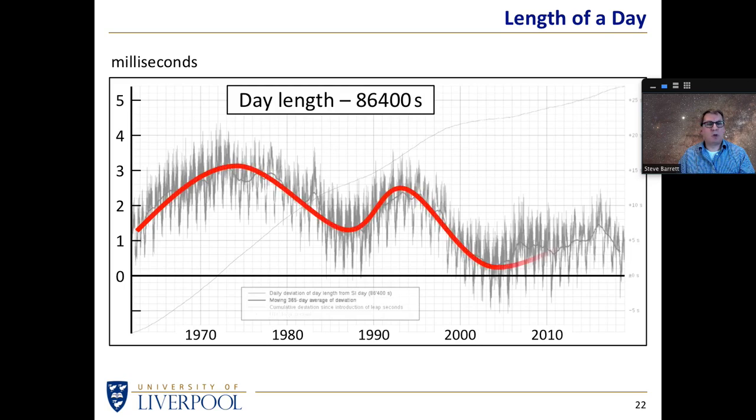But the elephant in the room is why is it varying by quite a few milliseconds on a period of decades? Perhaps the earth's mantle is changing in some way that we don't fully understand. So on average there's an increase in the length of the day over billions of years but over decades there seems to be variations that we need to get a handle on to better understand what's going on.